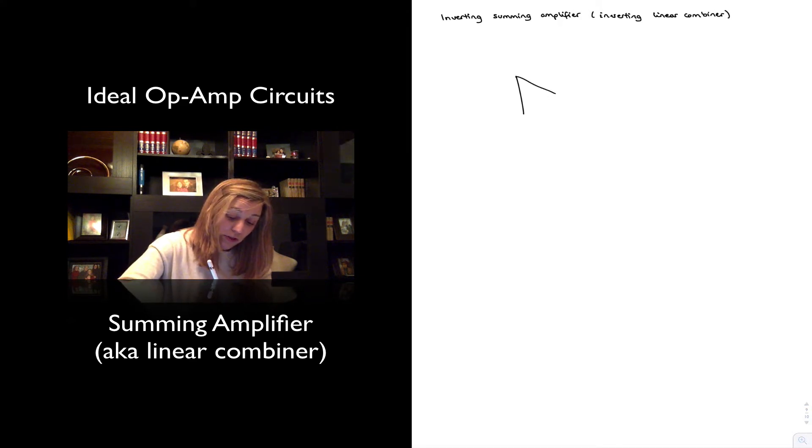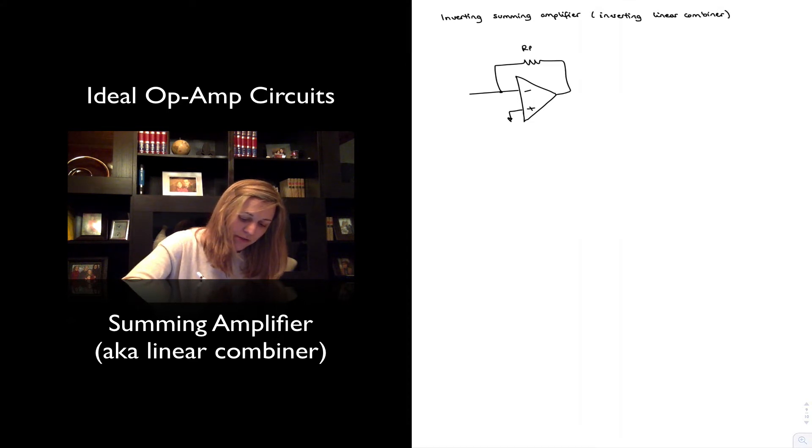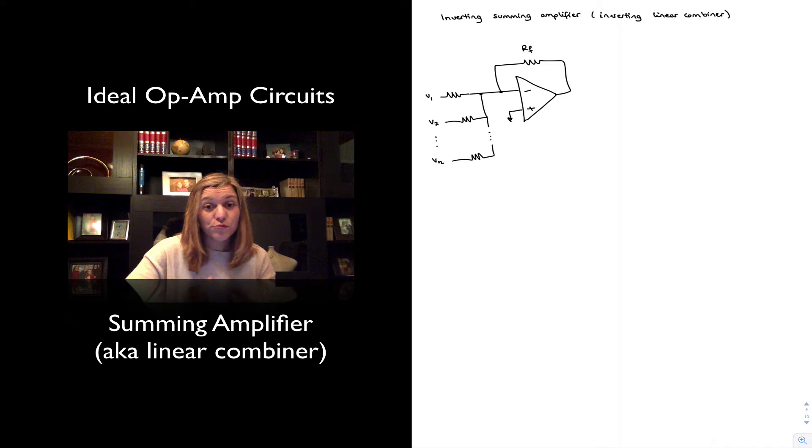But in essence, it consists of an op-amp and it's connected in a negative feedback configuration. So there is a feedback resistor, RF. And then there are different inputs applied on the inverting input terminal. V1, V2, dot dot dot, all the way to VN.